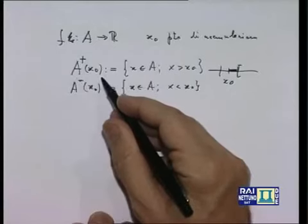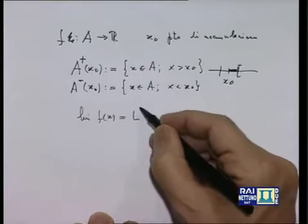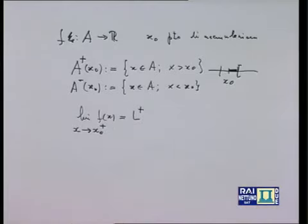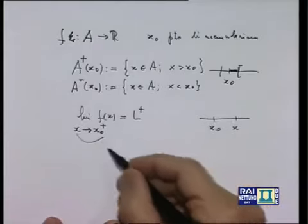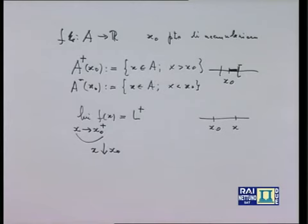Se esiste il limite della funzione così ristretta, questo limite lo chiamo limite a destra, e si scrive: lim f(x) per x → x₀⁺ (con un più in alto), oppure con una freccia discendente indicando che x tende decrescendo a x₀. Analogamente, considero la funzione definita soltanto in A⁻(x₀), non guardo ciò che accade a destra, e calcolo il limite: se esiste, lo chiamo limite a sinistra.